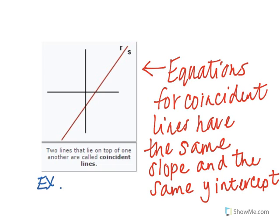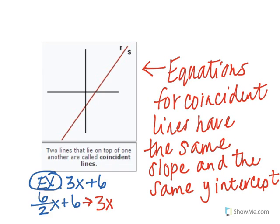An example of this would be 3x plus 6 and 6 over 2x plus 6. These two are the exact same equation, it's just this one is not reduced. But if you did reduce it, these two would be the exact same line and they would be on top of each other.